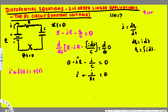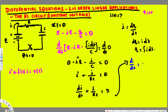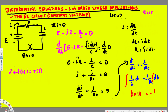We can write I-prime as dI/dt, so: dI/dt plus I over RC equals zero. Moving I over RC to the other side gives dI/dt equals negative I over RC. This is a separable equation, so we bring like terms together: (1/I)·dI on one side, and negative (1/RC)·dt on the other. Integrating both sides gives ln|I| equals negative t over RC plus a constant.